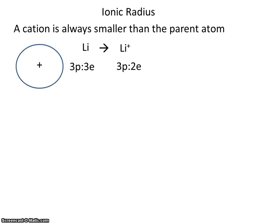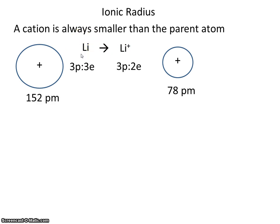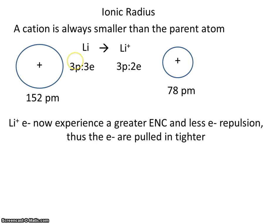Here's a little picture example. Here's a lithium atom, and here's a lithium ion. So a cation is always smaller than the parent atom. Here are just some sample measurements — a rough estimation of the size of lithium and the lithium ion. Lithium's electrons now experience a greater effective nuclear charge and less electron repulsion. Thus, the electrons are pulled in tighter.